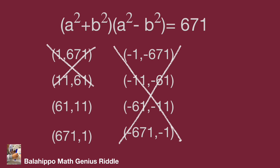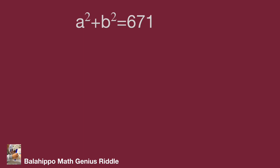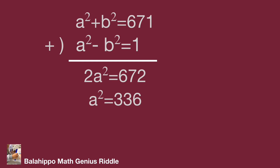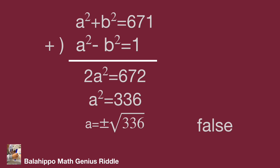Let's substitute each group one by one. Look at the 671 and 1 number group: A² + B² = 671 and A² - B² = 1. Adding these two equations gives 2A² = 672, so A² = 336. Therefore A = ±√336, which is not an integer. So this is not the right answer.